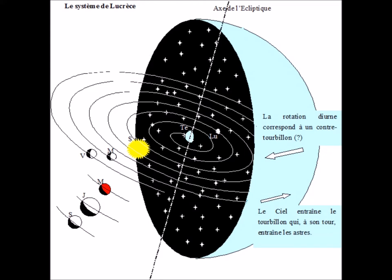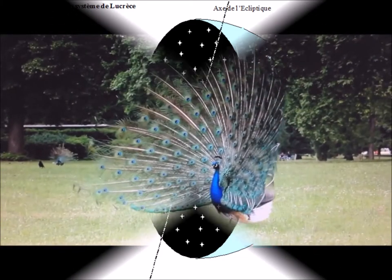This vortex is a swirling air. Lucas adds to it an opposite current of air, a counter vortex. Moreover, a variable density of this air would explain the unequal duration of days and nights.